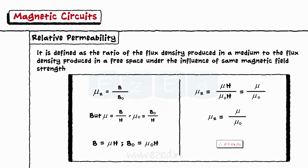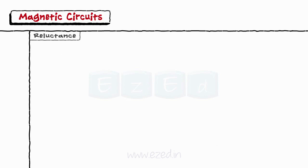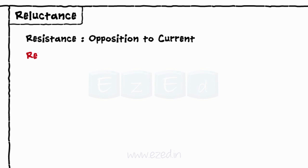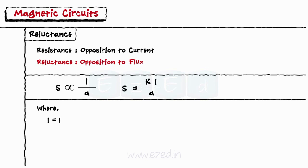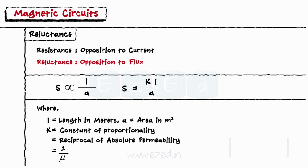The last term we study is reluctance. As resistance is the opposition offered to the flow of current, the opposition offered to the flow of flux is called as reluctance. It is denoted by S and is given as S ∝ L/A, where L equals the length of the circuit and A equals the area of cross section. Thus, finally, S = L / (mu₀ × mu_R × A).